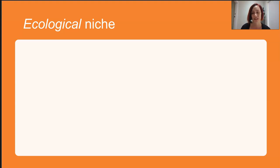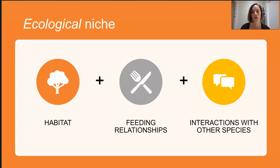It's the sum total of its interactions and they have to all be taken into consideration. The when, the where, the how, the what, the why of eats, sleeps, poops, all of those things need to be considered. So the full range of resources it uses, what it produces, how it does these things. We like to talk about it in terms of habitat, feeding relationships, and the interactions with other species. This is a really complex layered concept.